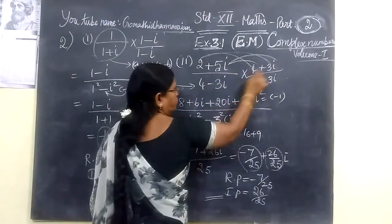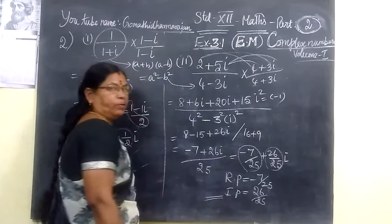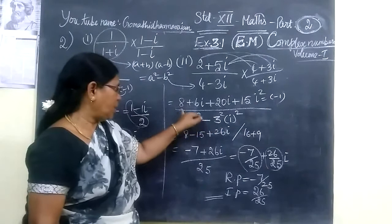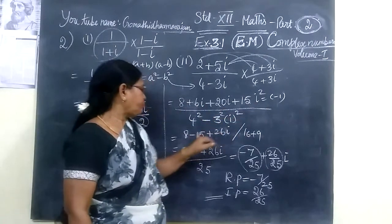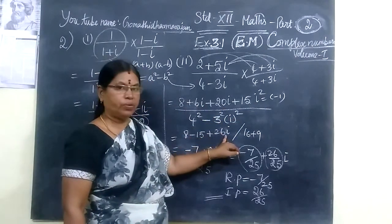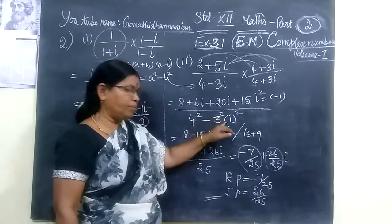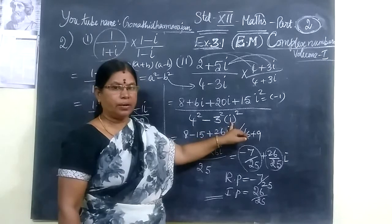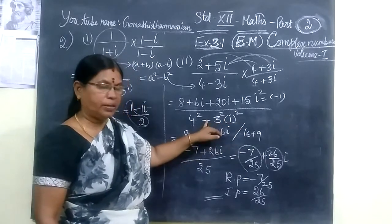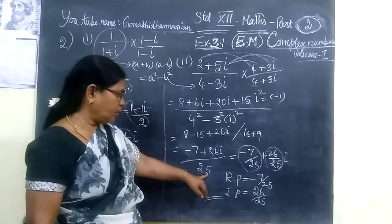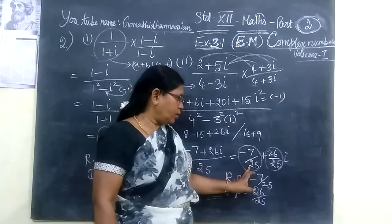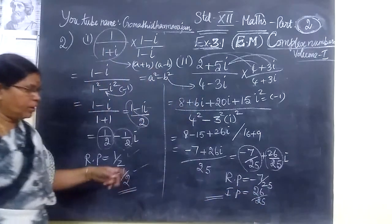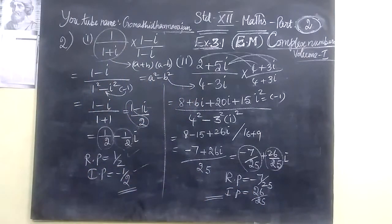Then multiply the second term — 5 into these two terms. Keep in mind: i squared means minus 1. So in the last step you get 8 minus 15, and then 6i plus some term. The denominator: 4 squared plus 3 squared gives 16 plus 9 equals 25. You are splitting into real part and imaginary part, and the answer is correct.